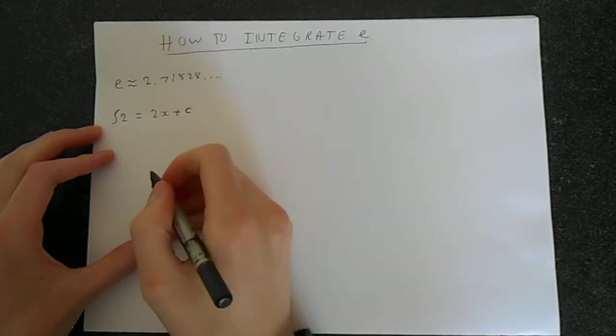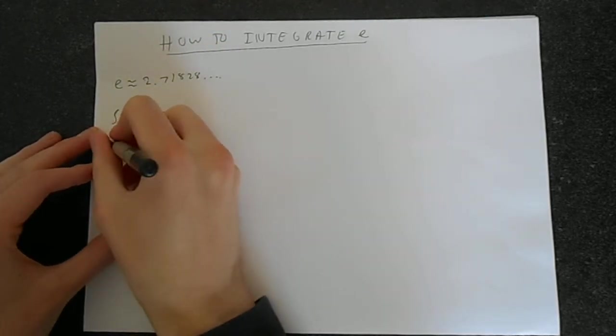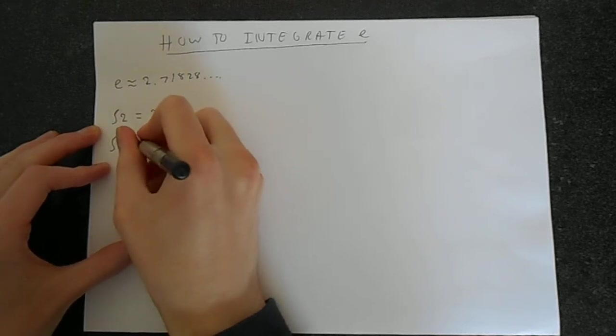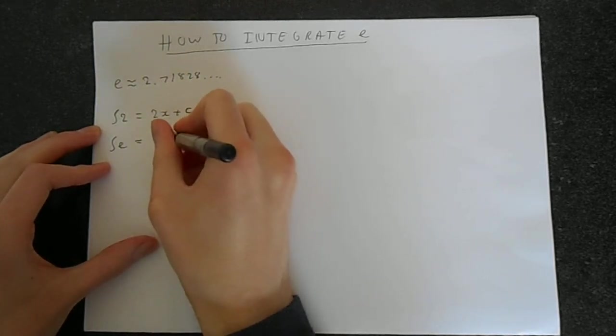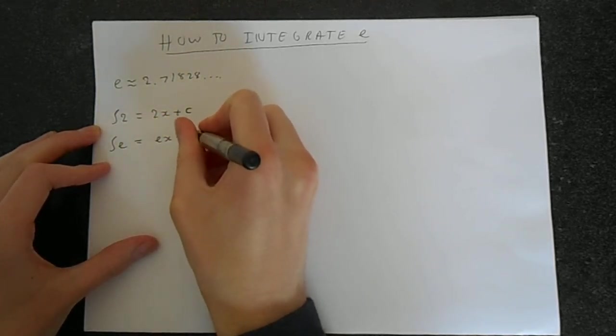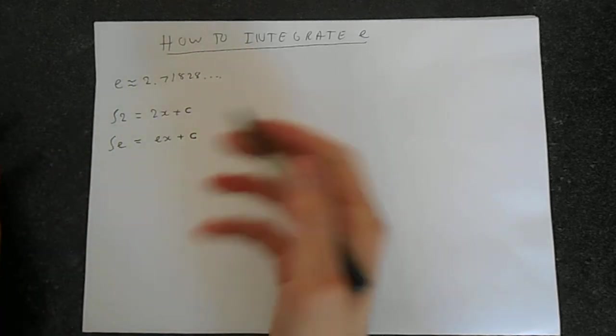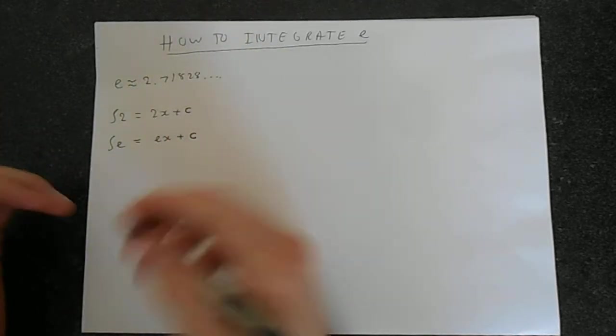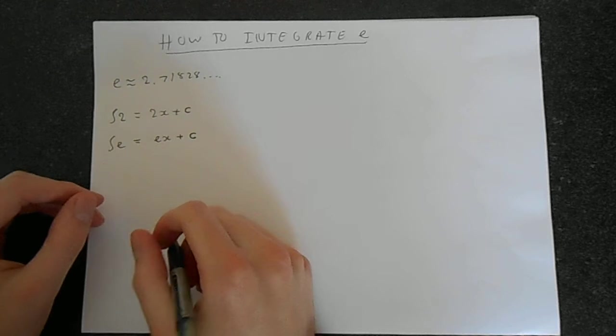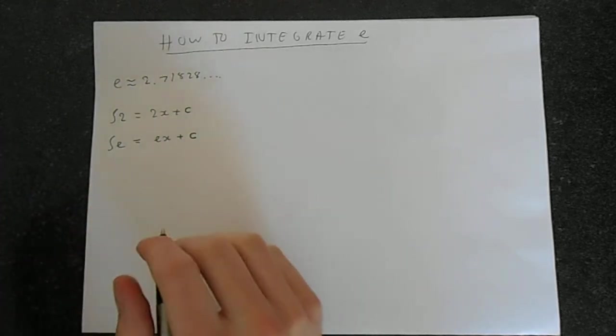But when we think that e is just a number, obviously the integral of e would simply be ex plus some constant, because the function could have been differentiated and we may have lost something. Integration is anti-differentiation.